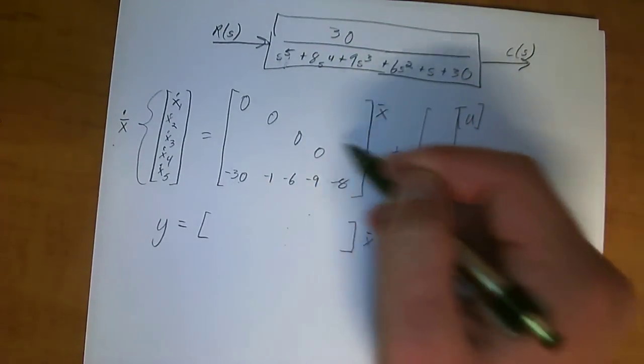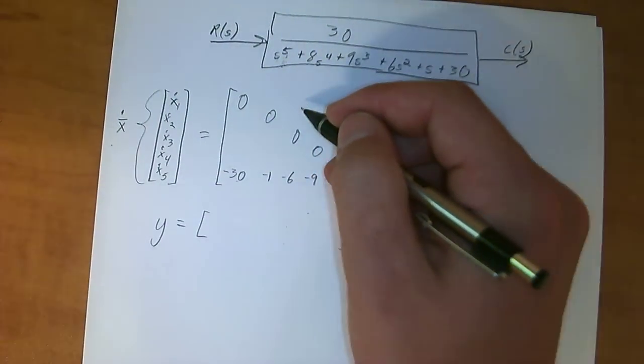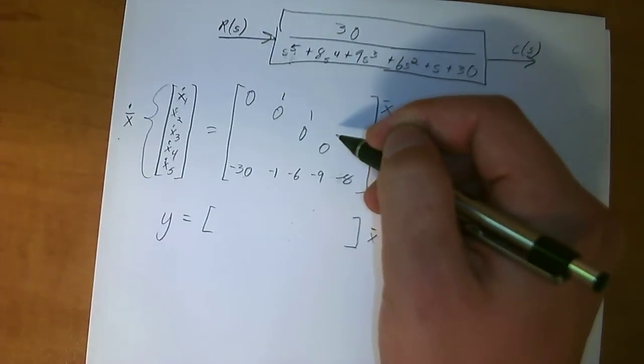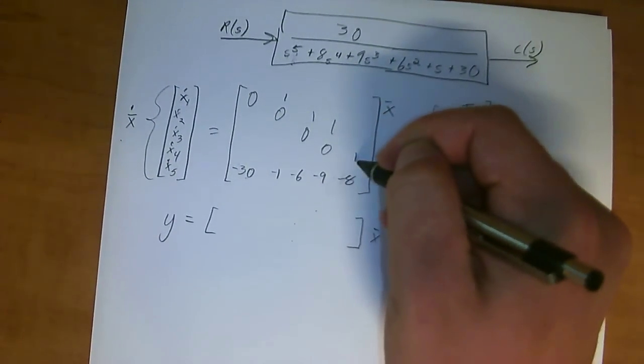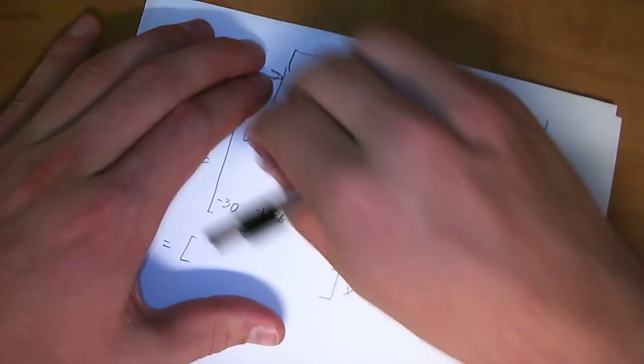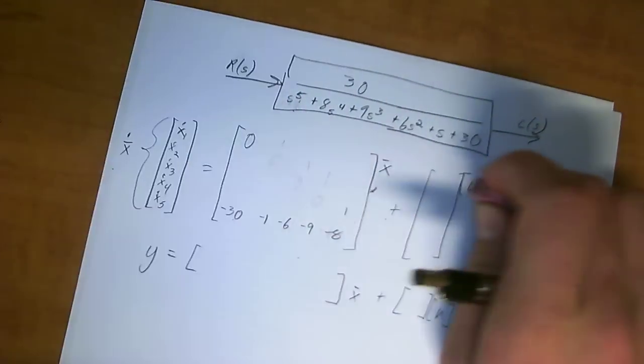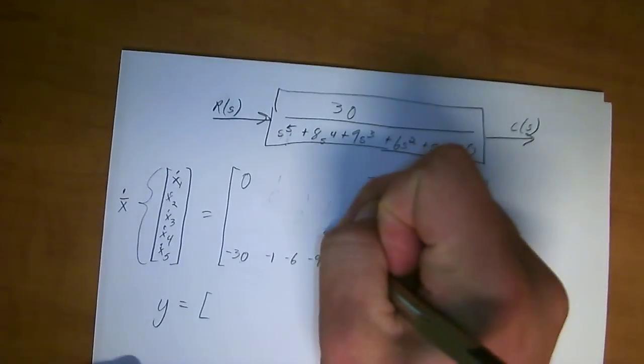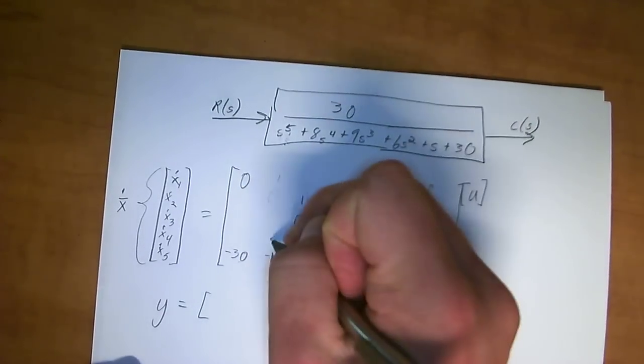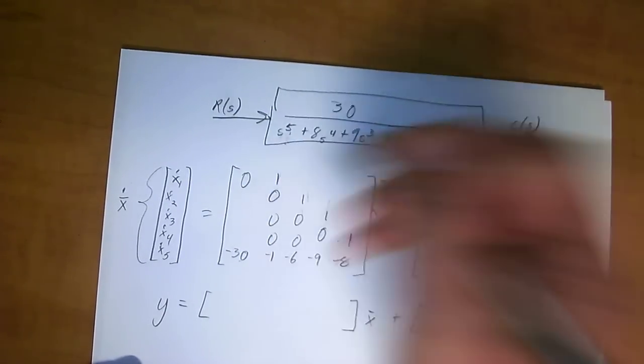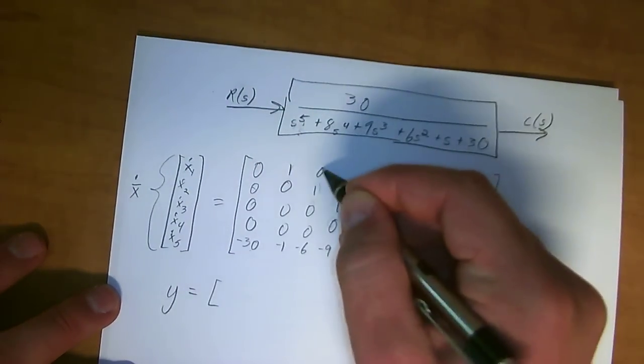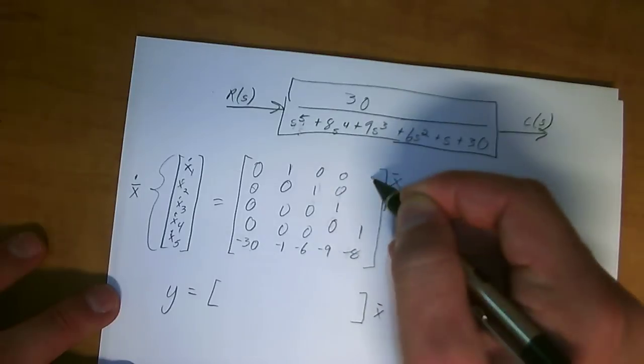You know that the diagonal above the diagonal has to be all 1. So 1, 2, 3, 4, got that right. This isn't working very good. 1, 0, 1, 0, 0, 1, 0, 0, 0, 1, 0, 0, 0, 1. There we go, that looks a little bit better.